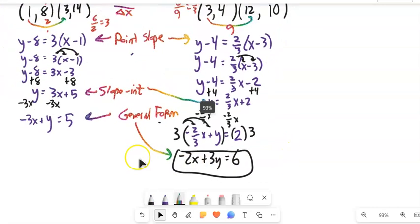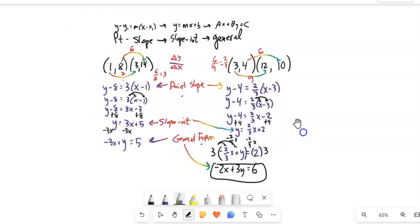I've gotten all 3. So again, I can write it in point-slope, distribute that slope, get the y over, get it in slope-intercept, get that x over, get rid of fractions if I have to, then I have it in that general form.